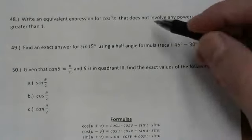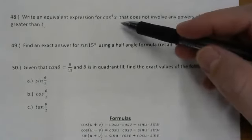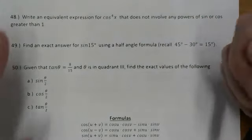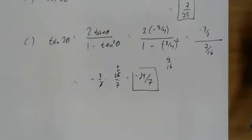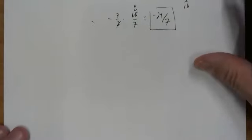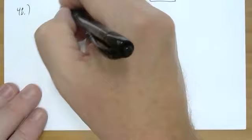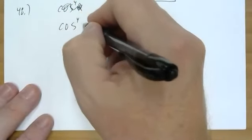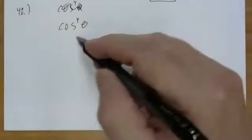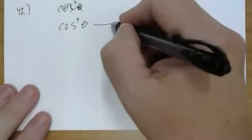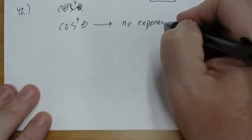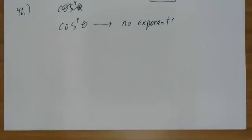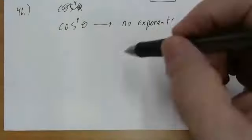Problem 48: write an equivalent expression for cosine to the fourth of x that does not involve any powers of sine or cosine greater than one. This seems a little bizarre, so let me explain it. I'll use theta instead of x. Basically we want to rewrite cosine to the fourth power of theta but with no exponents.